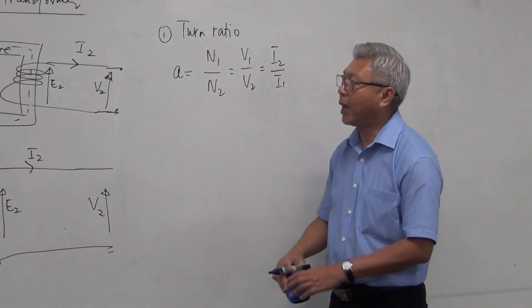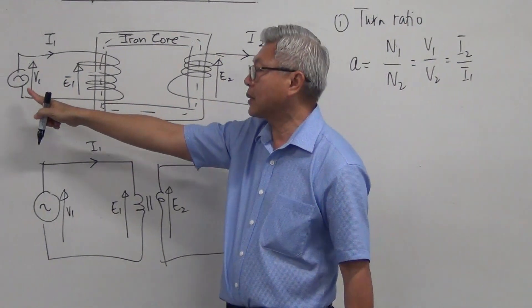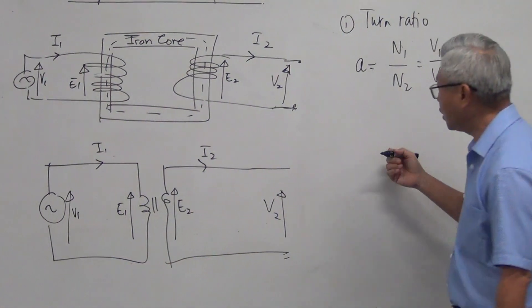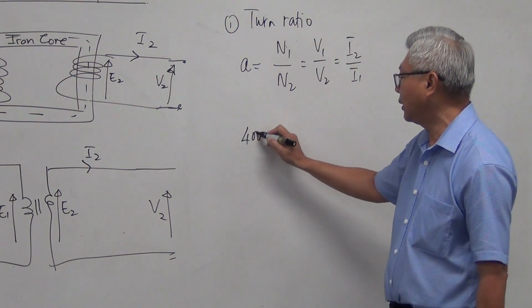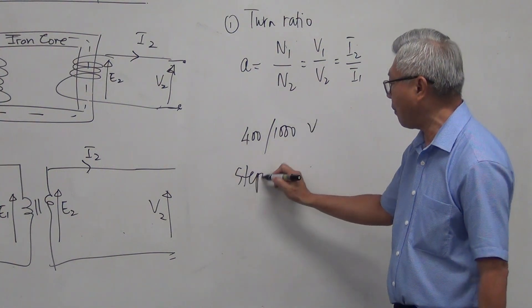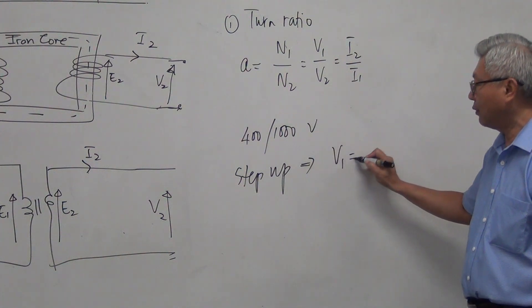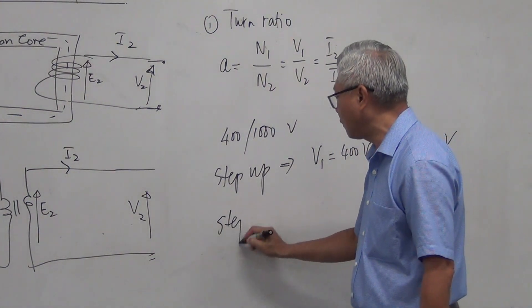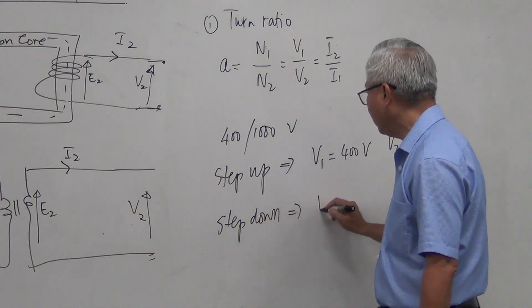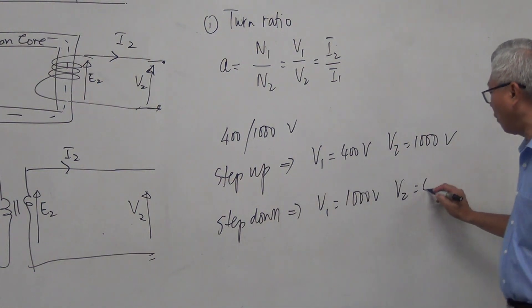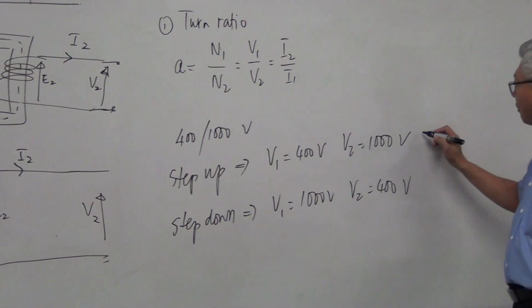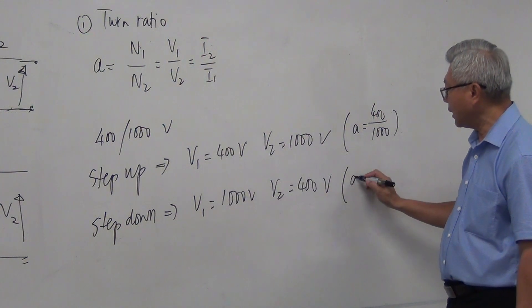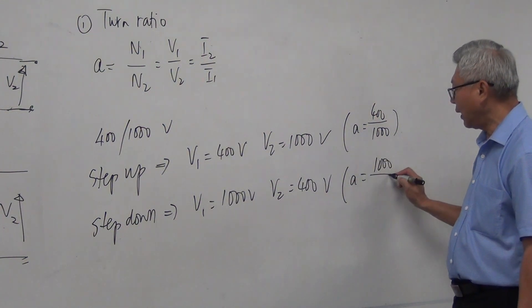How do you know which is the primary? The problem will tell you. Where the power supply is connected, that side is the primary. For example, with a 400 to 1,000 volt transformer: if it is a step-up transformer, V1 is 400 volts and V2 is 1,000 volts. If it is a step-down transformer, V1 is 1,000 volts and V2 is 400 volts. So for the step-up case, turn ratio equals 400 over 1,000; for the step-down case, turn ratio equals 1,000 over 400.